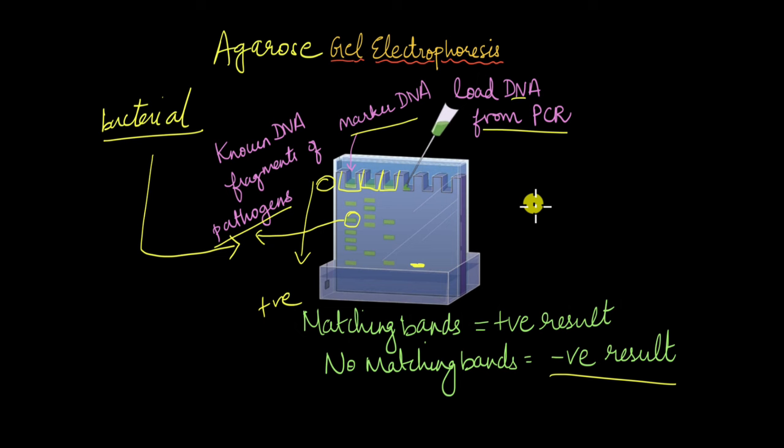These methods are commonly used to diagnose many diseases—not just pathogenic diseases. Gel electrophoresis can detect several cancers, which are caused by mutated genes. We load DNA containing mutated genes and check against marker DNA of mutated genes. This tells us the specific cancer type present in the patient. Genetic disorders can also be diagnosed using PCR and gel electrophoresis.